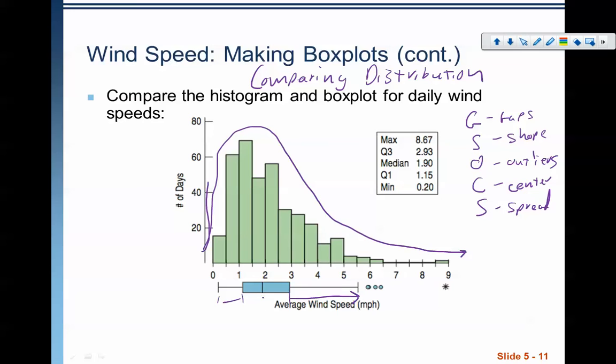We can also see that the median here is measured right around 1.90, because that's the spot on the box plot. We can also talk about a measure of spread, that the middle 50% of the data is between 1.15 and 2.93. We can say that there's a gap in the data between 6.5 and 8.67, somewhere around there.